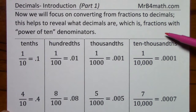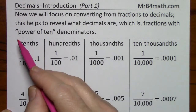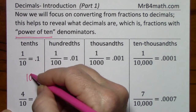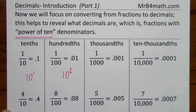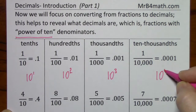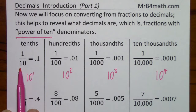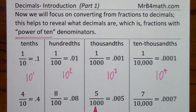We went from numbers to words and words to numbers. Now we'll focus on converting from fractions to decimals. This helps reveal what decimals are, which is fractions with power-of-ten denominators. Notice this denominator is ten to the first power, this one is ten to the second power, then ten to the third, ten to the fourth — and this pattern continues indefinitely. The numerators can change — eight, five, seven — but the denominators always have to be some power of ten.